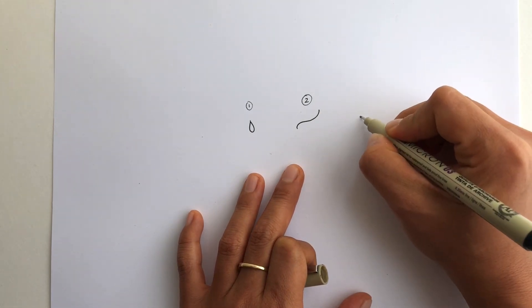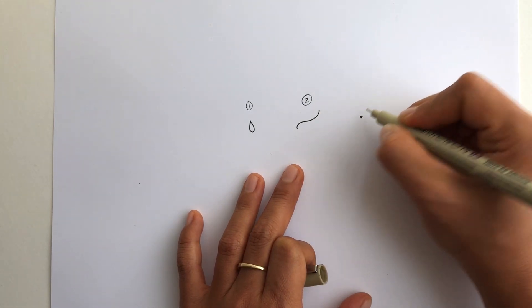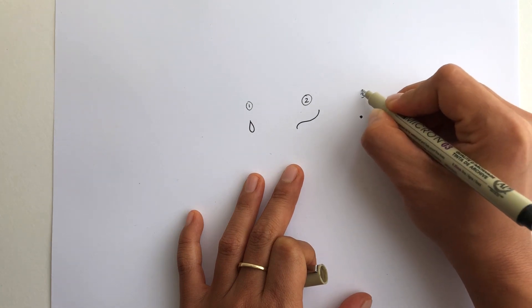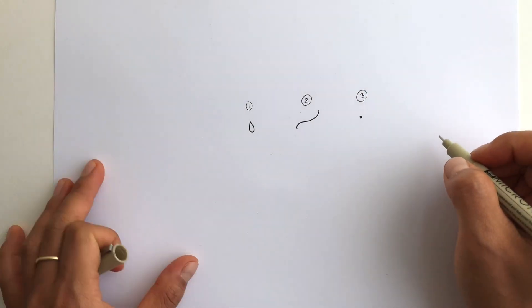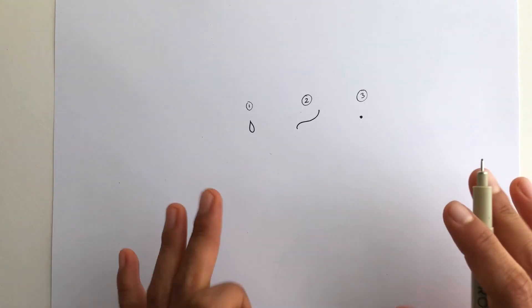And number three is so simple that it's hardly even a shape, but it's just a dot. But we're gonna use it so I'm throwing it in there. All right, so those are the three shapes.